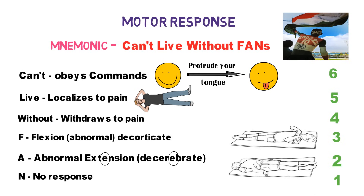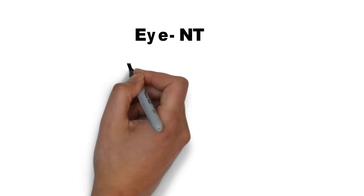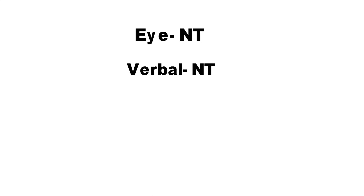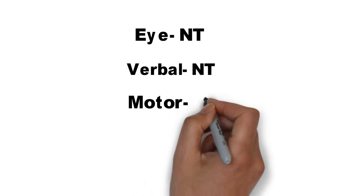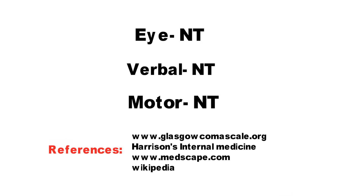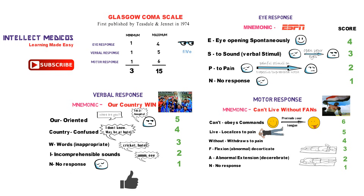After assessing the patient, sum up the scores of all three responses to get the GCS score out of 15. If local factors interfere with eye opening, eye response is noted as not testable. If the patient cannot verbalize — for example, if intubated or tracheostomized — verbal response is noted as not testable. If the patient is paralyzed, motor response is also noted as not testable. This is all about the Glasgow Coma Scale — it should now be easy to remember and quickly calculate a patient's GCS score.